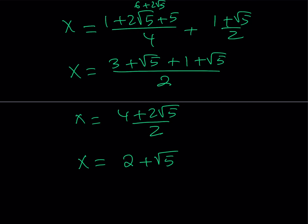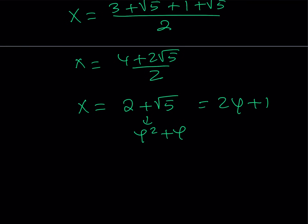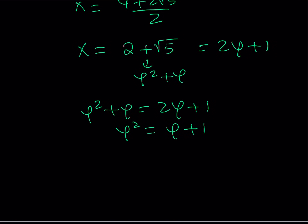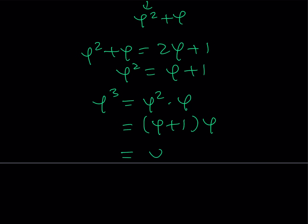Notice that phi squared plus phi can also be written as 2 phi plus 1. Why? Because phi squared equals phi plus 1, which is another interesting property of the golden ratio. We can also expand higher powers of phi. For example, phi cubed equals phi squared times phi. Replacing phi squared with phi plus 1 and multiplying by phi gives phi squared plus phi, which equals 2 phi plus 1. So phi cubed equals 2 phi plus 1.